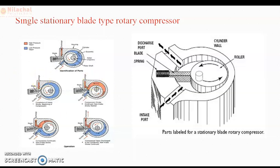As the roller runs towards the middle position, the second figure shows the roller in the middle position. In the third figure, more vapor refrigerant is drawn into the cylinder while the compressed refrigerant is discharged to the condenser. At the end of the compression stroke — shown in the fourth figure — most of the compressed vapor refrigerant is passed through the discharge port to the condenser, and a new charge of refrigerant is taken into the cylinder.